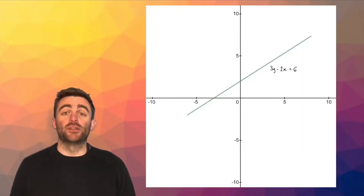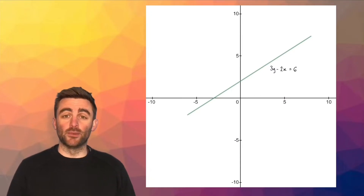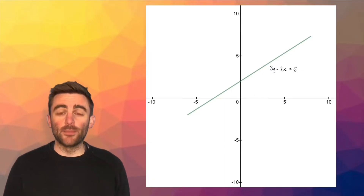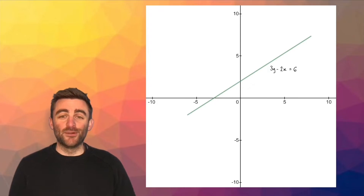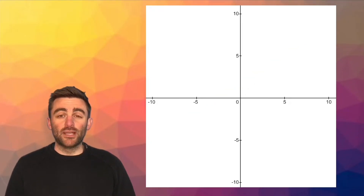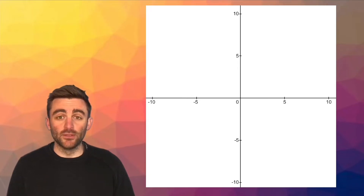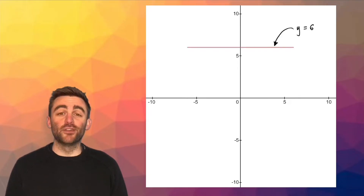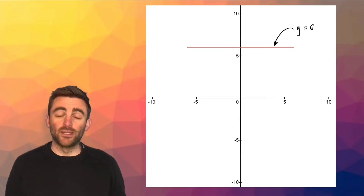By now we should be well used to straight line equations which have a y term, an x term, and are equal to a number, like 3y minus 2x equals 6. But not every straight line is in that form. Where a straight line has a gradient of zero, it will be horizontal, and the equation will be of the form y equals a number, such as y equals 6.